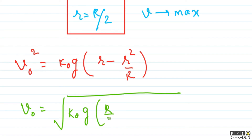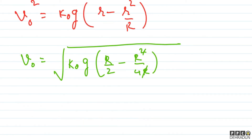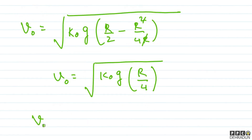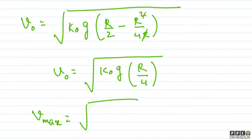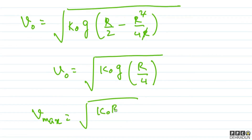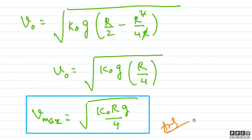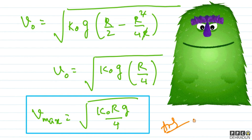Substituting r = R/2: v² = k₀·g · (R/2 - R²/4R) = k₀·g · (R/2 - R/4) = k₀·g · (R/4). Therefore v_max = √(k₀·g·R/4). This is the final answer. I hope this solution was clear. If any doubt remains, feel free to contact me. Take care, bye bye.